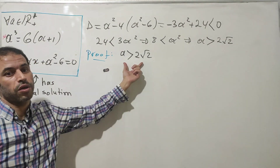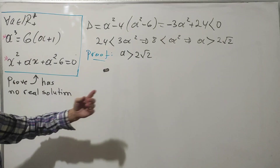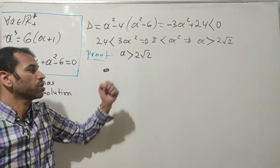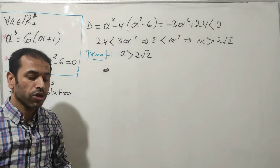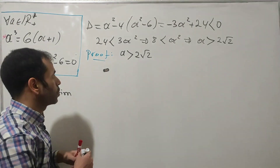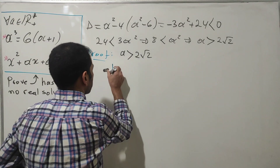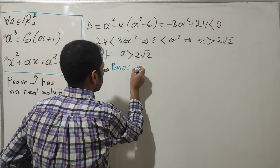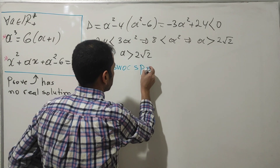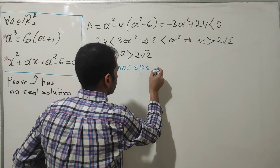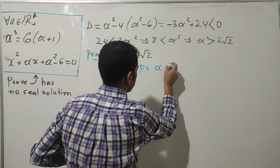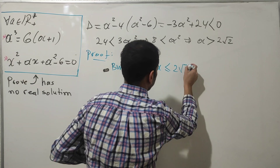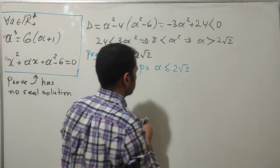The best way to prove this is by contradiction. So by the way of contradiction, suppose a is less than or equal to 2√2.